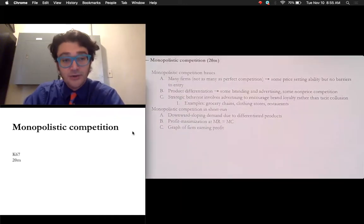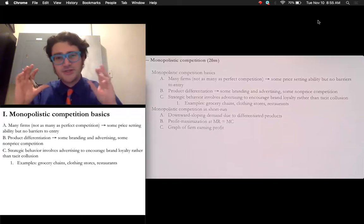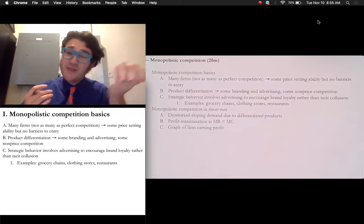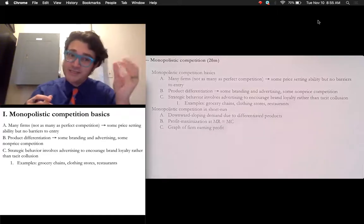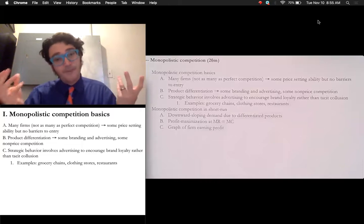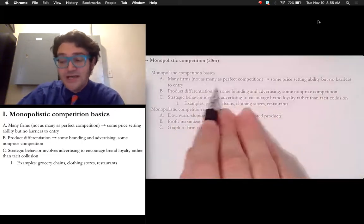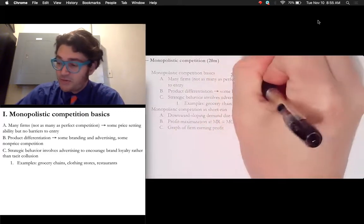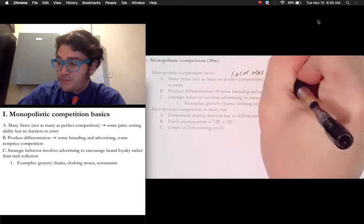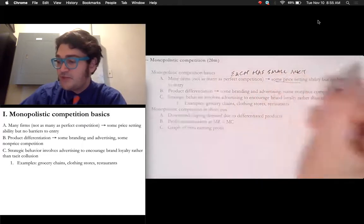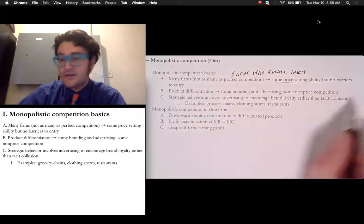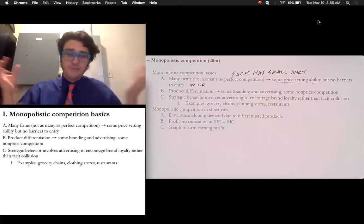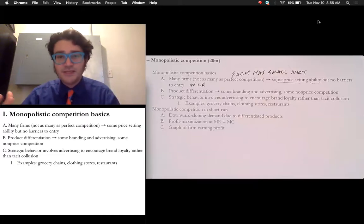The first thing to know is that monopolistic competition shares some of the characteristics of all of the other different market structures. That's why it's called monopolistic competition - it's got some monopoly-like things, but it's also pretty competitive as well. So there's many firms, but not as many as perfect competition, and we'd say that each has a small market share. They have some price setting ability, but it's really fairly minimal and no barriers to entry in the long run.